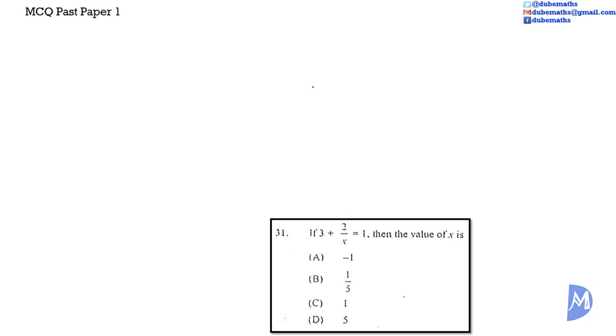We want to make x the subject of the formula. X is in the denominator. As discussed, we want to get the fraction with x alone on one side and multiply by the denominator, so that x goes to the numerator. We have 3 plus 2 over x is equal to 1. We want 2 over x on one side. So we're going to subtract 3 from both sides. 3 subtract 3 is equal to 0. So we remain with 2 over x is equal to 1 subtract 3 is equal to negative 2.